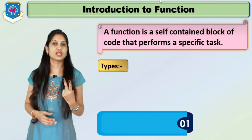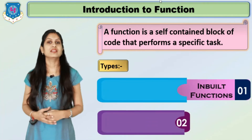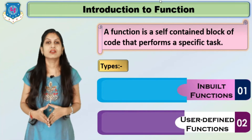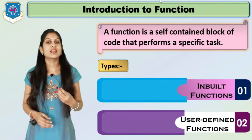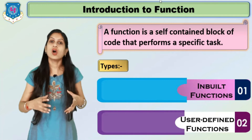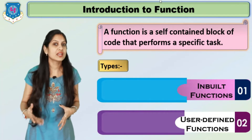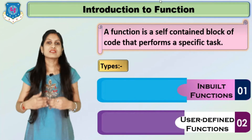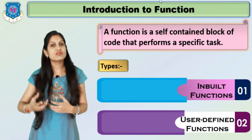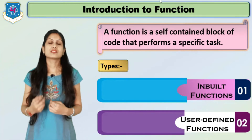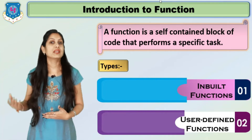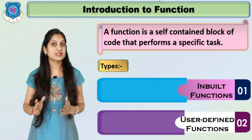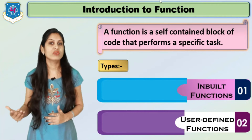There are mainly two types of functions: inbuilt functions and user-defined functions. We already discussed inbuilt functions in our previous module on strings — strlen, strcpy, strcat are all inbuilt functions found in the string.h header file. Likewise, there are many inbuilt functions we can directly call. But if a function is not available, it can be created by the user — that is a user-defined function, which is our chapter.